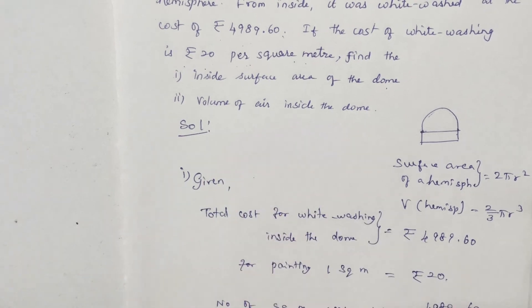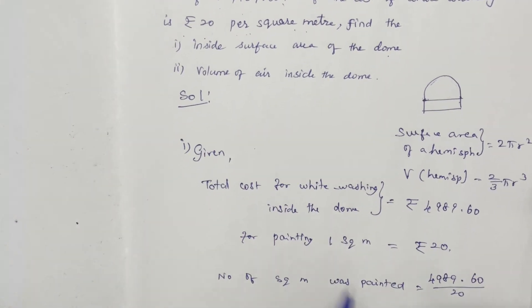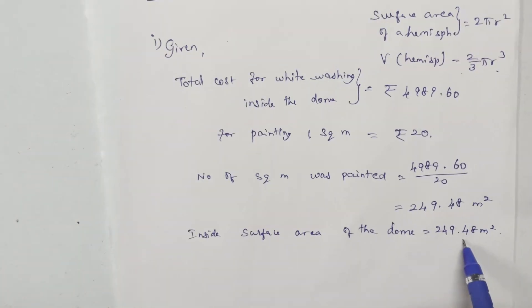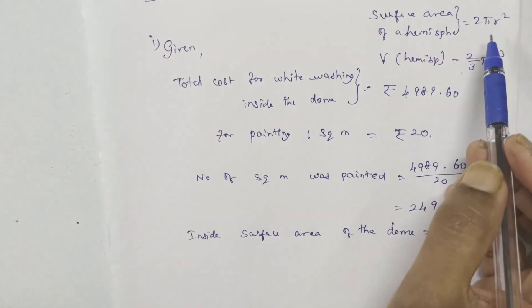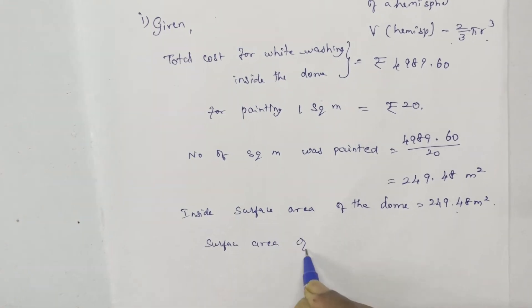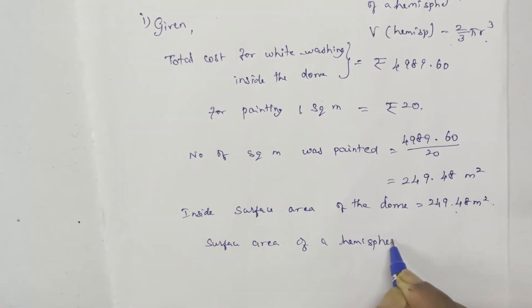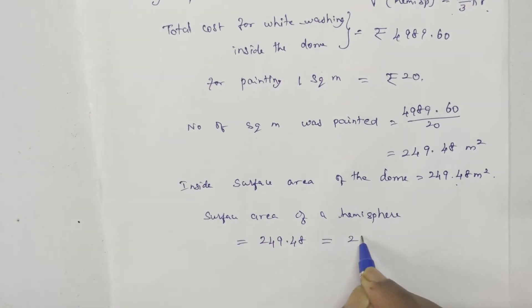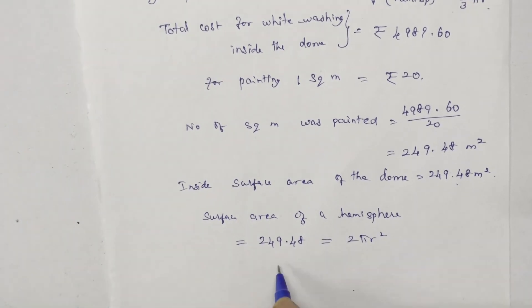Second, volume of air inside the dome. That will be calculated by finding r. The surface area of a hemisphere is 2 pi r squared. Therefore, 2 pi r squared equals 249.48.